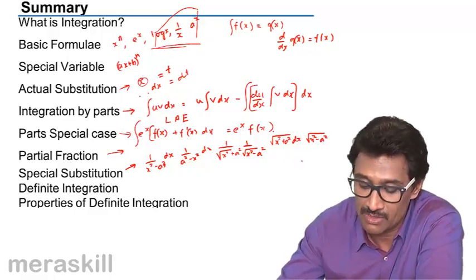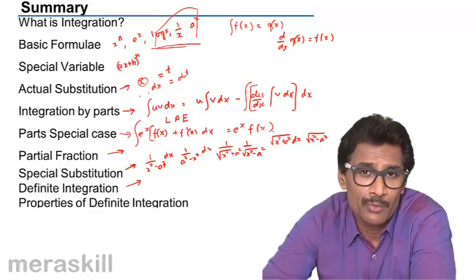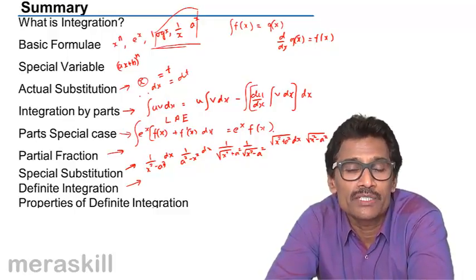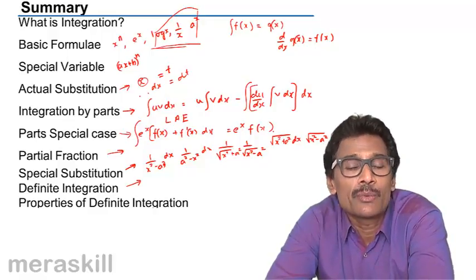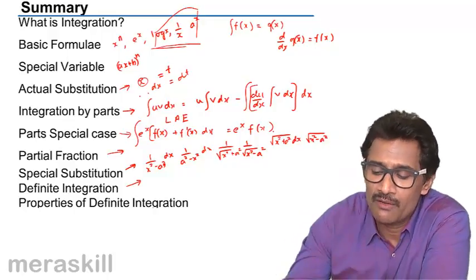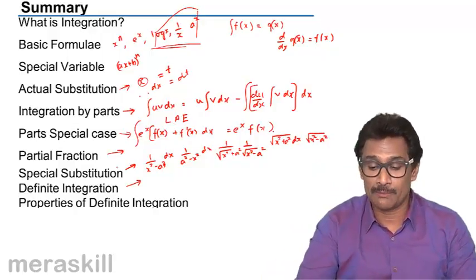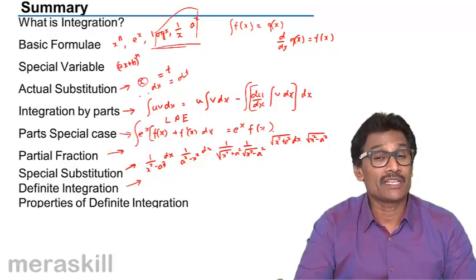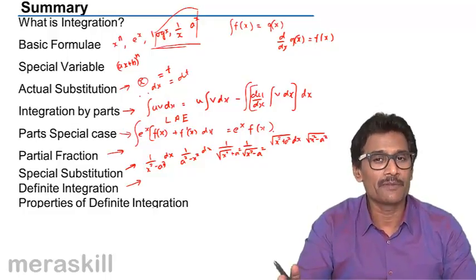Then we did various concepts of definite integration. We said that definite integration gives the area of the curve within a specific domain, so it is a bounded curve, and we are able to tell the exact value. In this we did the various rules which we applied often. Most of the examples were based on finding the integration and then substituting the values. But remember, in definite integration, when you're combining definite integration along with actual substitution, when you change the variable, the domain range also has to be changed. It will be easier to do it that way.